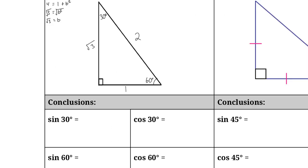So this is our 30-60-90 triangle and let's set up our trig ratios for 30 degrees and 60 degrees. The sine of 30 degrees — that's opposite over hypotenuse — is equal to 1 over 2. The cosine of 30 degrees — adjacent over hypotenuse — is equal to square root of 3 over 2. The sine of 60 degrees is the square root of 3 over 2, and cosine of 60 degrees is equal to 1 over 2. So these are our sine and cosine ratios for the 30 and 60 degree angles.